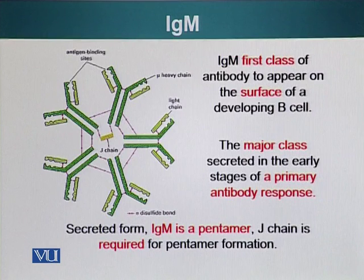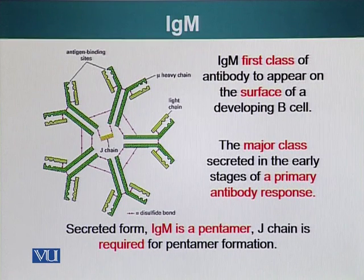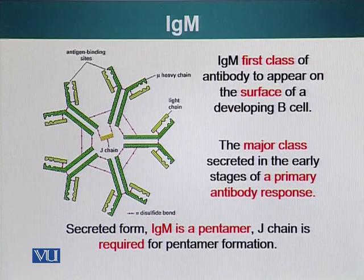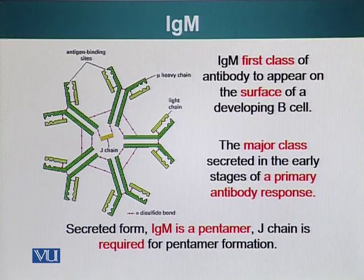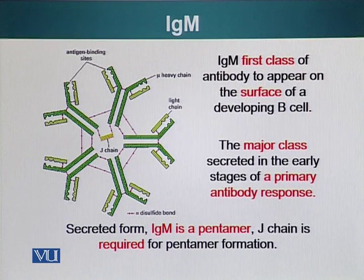IgM is the first class of antibody that appears on the surface of a developing B cell, embedded on its surface. Once the B cell has been activated, it starts producing antibodies that are not only present on its surface but are also released into the bloodstream, where they can encounter and neutralize the antigens that stimulated their production. IgM is the major antibody secreted in the early stages of the primary antibody response. Once secreted, IgM molecules form pentamers — five antibodies joining together — which have 10 antigen binding sites.